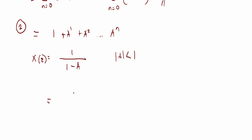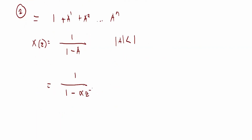Plugging in the correct value of A gives us 1 minus 1 minus — that's the Z-transform. Now we're going to find the region of convergence, and after that we deserve a drum roll.